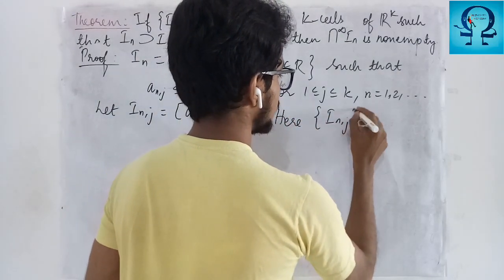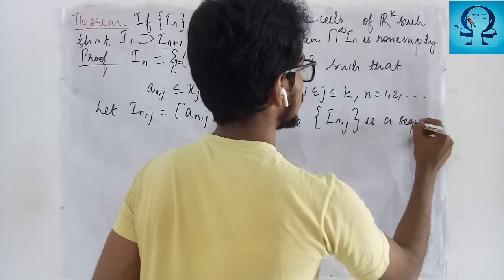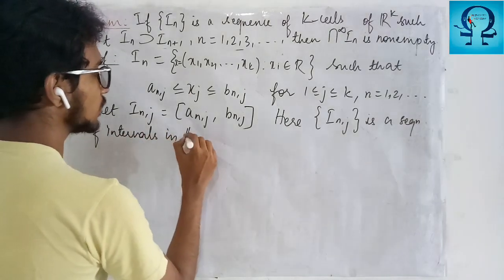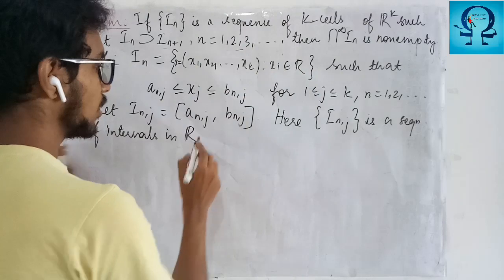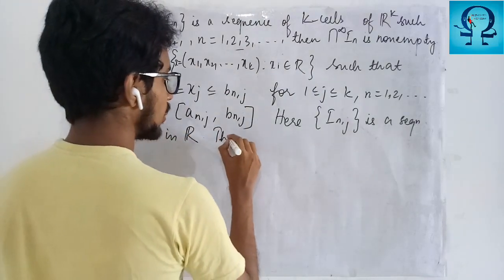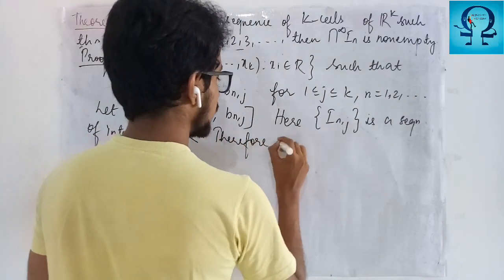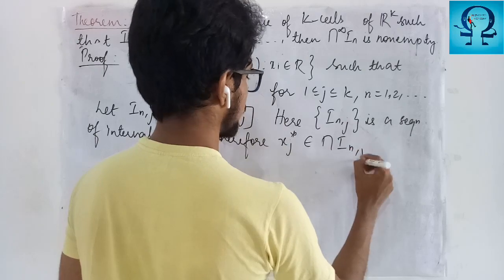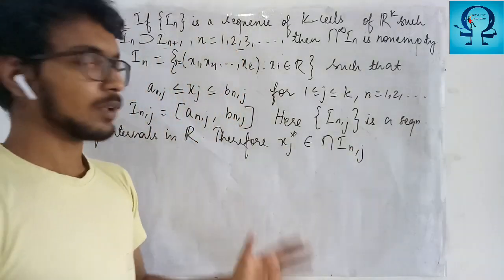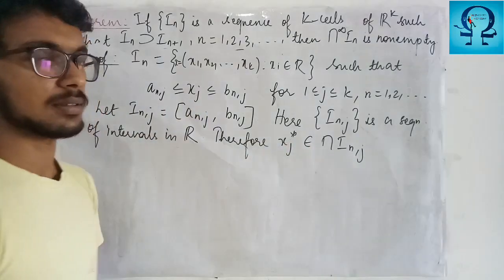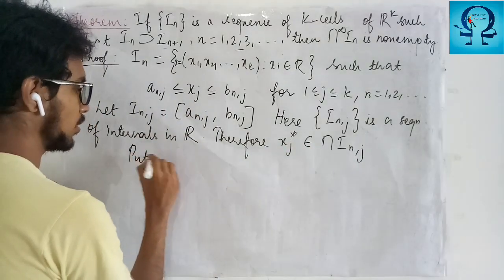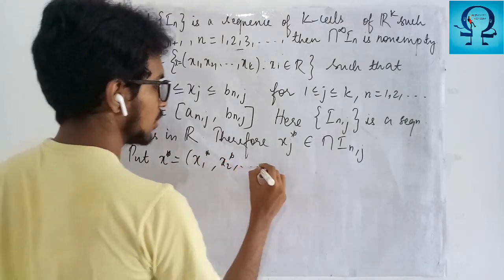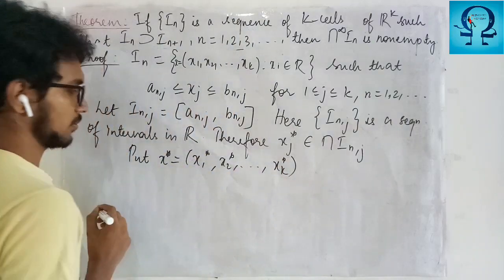The collection {I_{nj}} is a sequence of intervals in R satisfying all the required conditions. Therefore, by the previous result, you can identify some point — let me write that point as x_j* — in the intersection of those intervals. So let me put x* = (x_1*, x_2*, ..., x_k*).